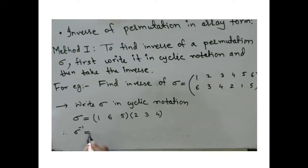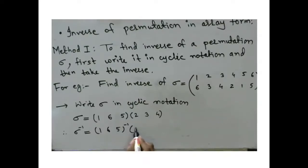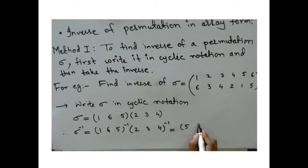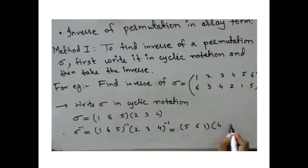Therefore sigma inverse equals (1, 6, 5) inverse times (2, 3, 4) inverse. Since the inverse of a cycle is the cycle written in reverse order, the inverse is (5, 6, 1)(4, 3, 2). This is the inverse of the permutation sigma.